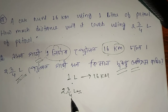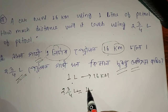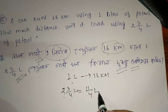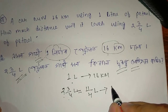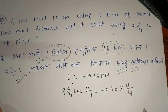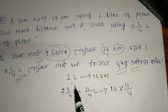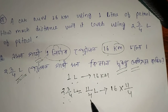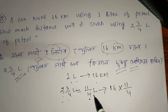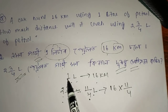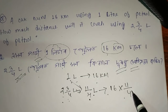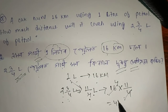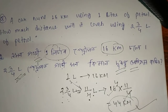Eventually we get the total. So the car will cover 44 km. How much? 44 km. Is that clear? 44 km. Clear? Next question.